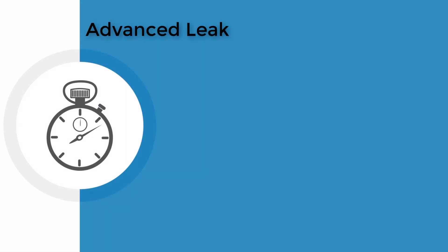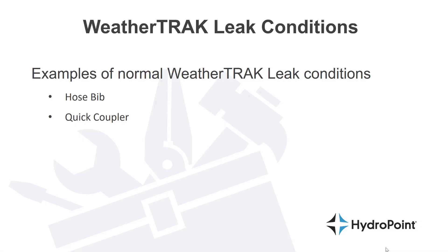The Advanced Leak feature in WeatherTrack recognizes that some irrigation systems are designed to use water without running operations through the irrigation controller. So if your system is designed with a hose bib or a quick coupler, these would be great examples of conditions on site that would cause water to run through the irrigation pipes without the controller being turned on. In WeatherTrack terms, this is considered a leak condition.